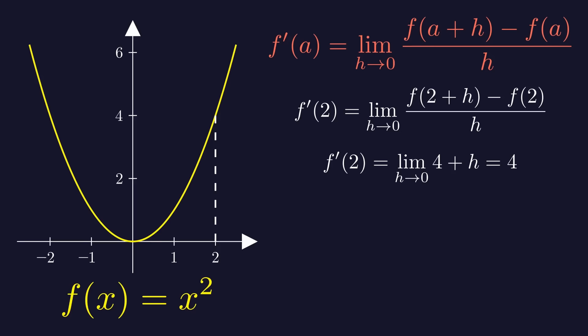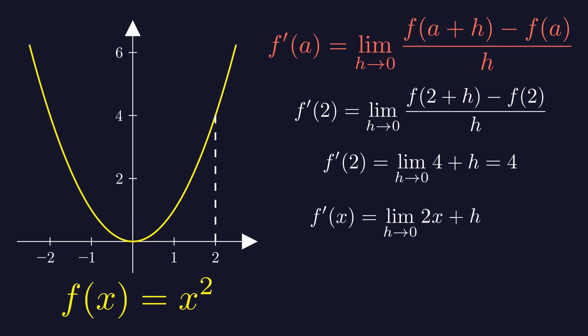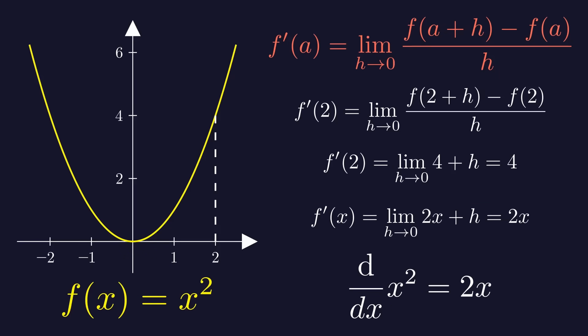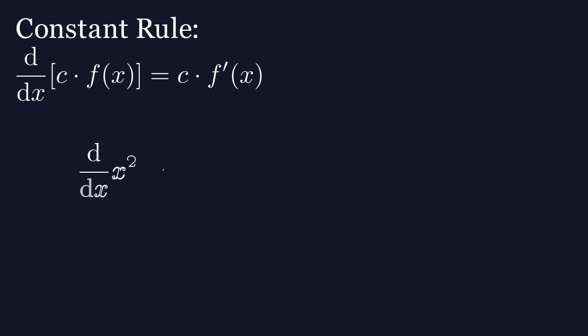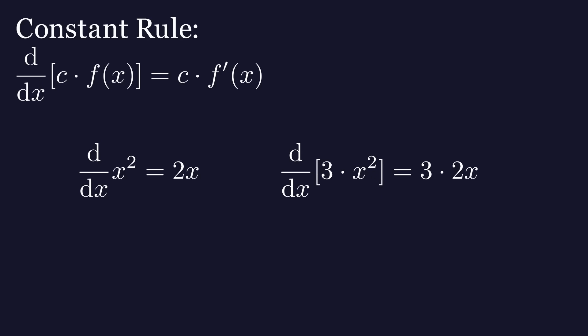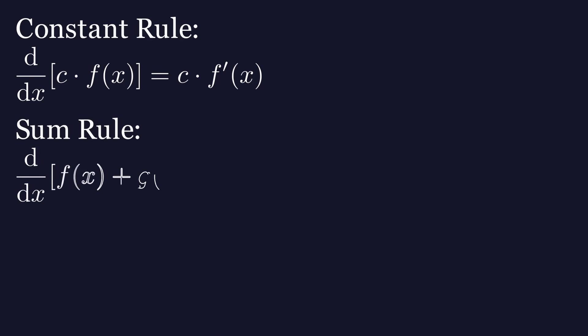But we can find a general formula for the derivative of this function. To do this, we calculate f prime of x instead of 2. After simplifying, we get that f prime is just equal to 2x. So the derivative of f of x equals x squared at any point x is just equal to 2x. Calculating derivatives doesn't always require using the definition. There are some rules and shortcuts that can make it easier. The constant rule tells us that the derivative of a function multiplied by a constant is equal to the derivative of that function multiplied by that constant. For example, the derivative of x squared is 2x, so the derivative of 3 times x squared will be equal to 3 times 2x. The sum rule tells us that the derivative of a function that is a sum of functions f and g is the sum of the derivatives of those functions. The last rule we will need to understand Euler's identity is the power rule.